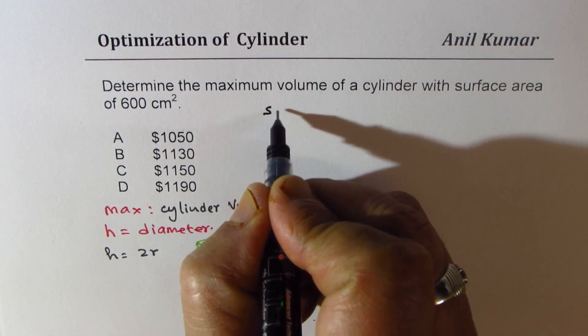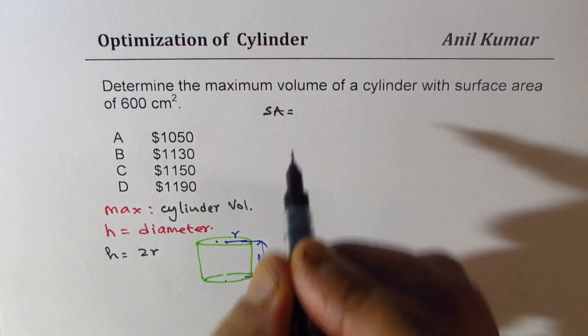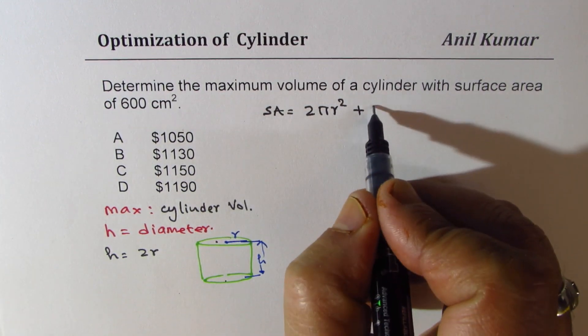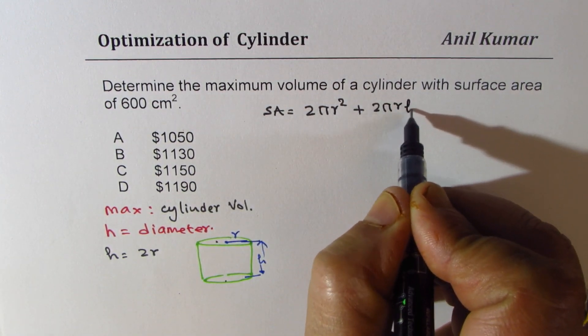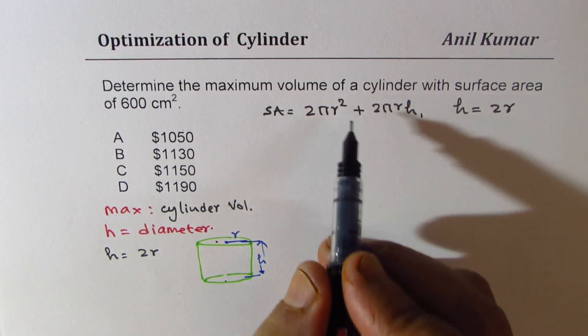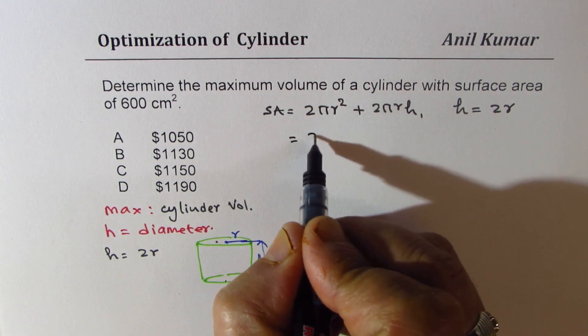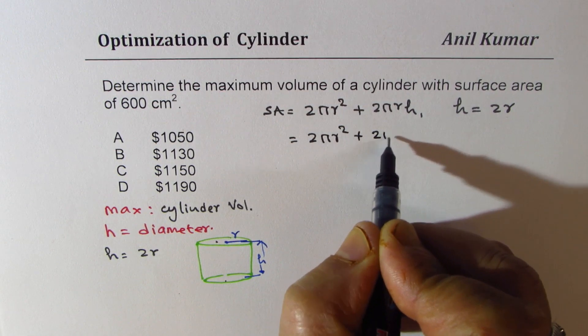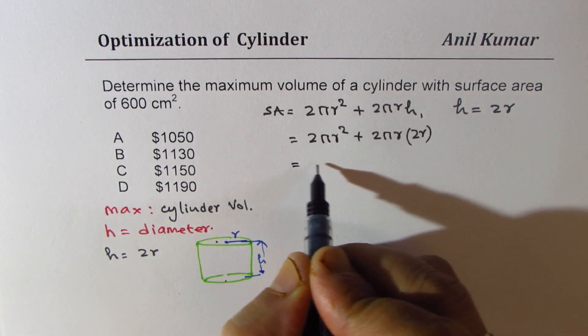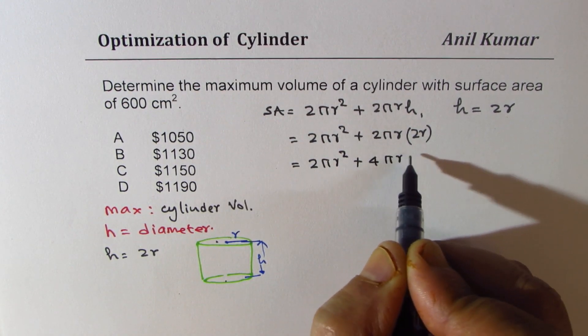Surface area for a cylinder is these two surfaces, that means 2 times pi r square plus lateral area, 2 pi r h. Now we know height is 2 times radius, so we will replace that height with 2 times radius. So we get 2 pi r square plus 2 pi r times 2 r.